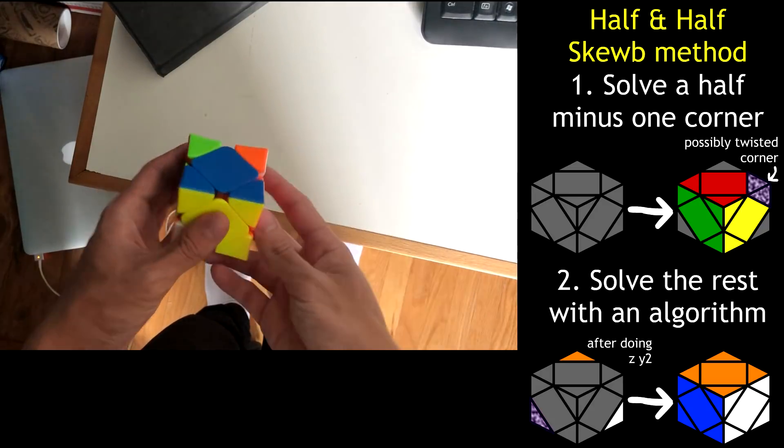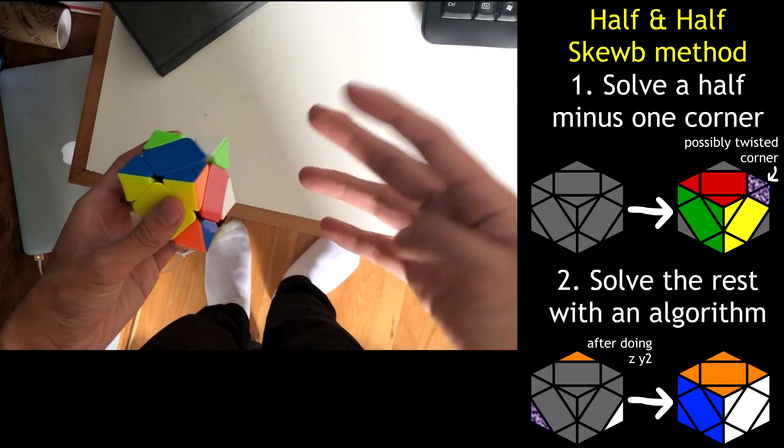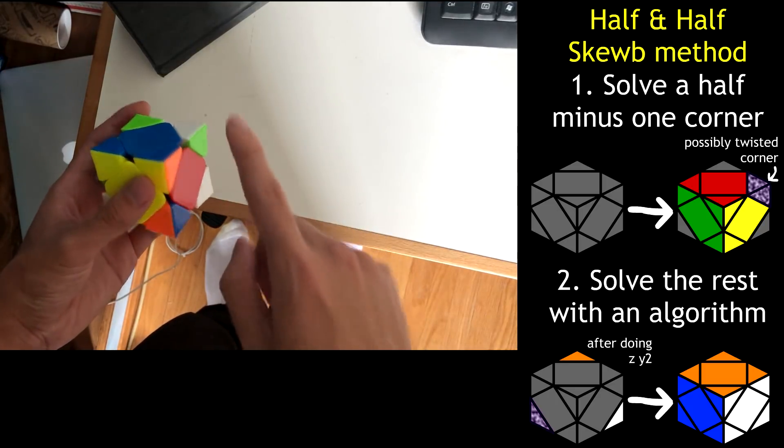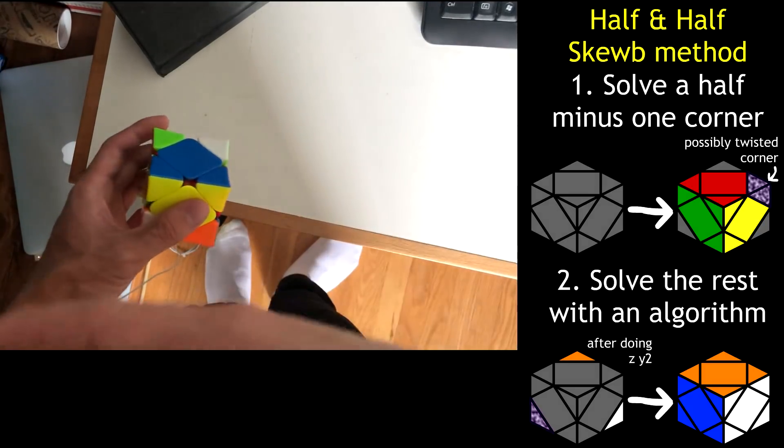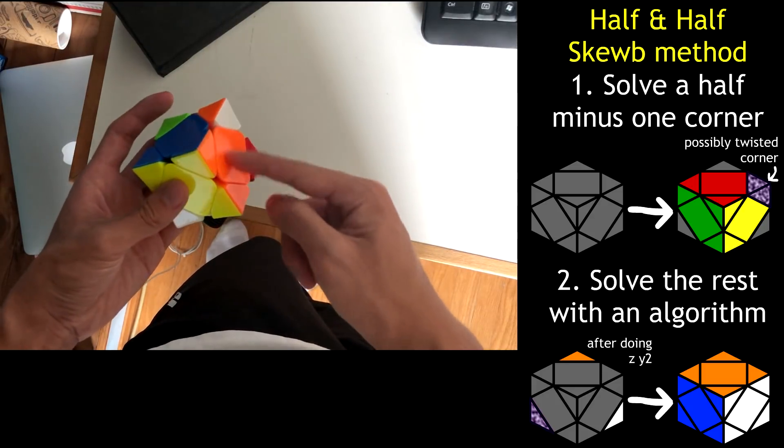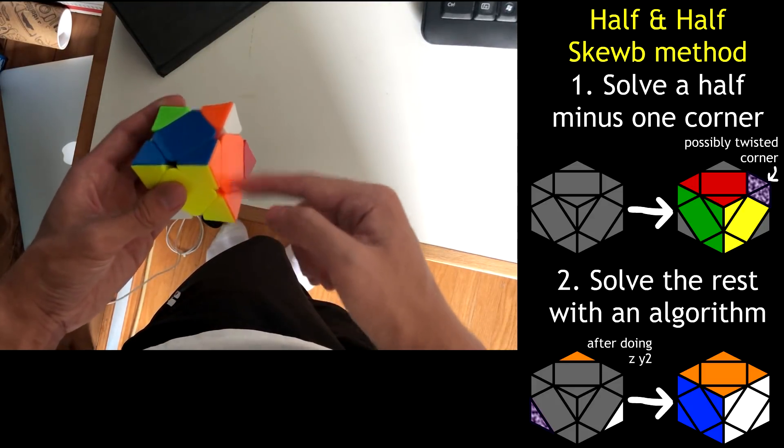And all you gotta do, when you have your chunk, is pick which of those four options is the easiest, do that single-pair extension, and you're done with step one. So in this case, doing that is one move to solve the orange-yellow pair in the front-right, and then we're done.